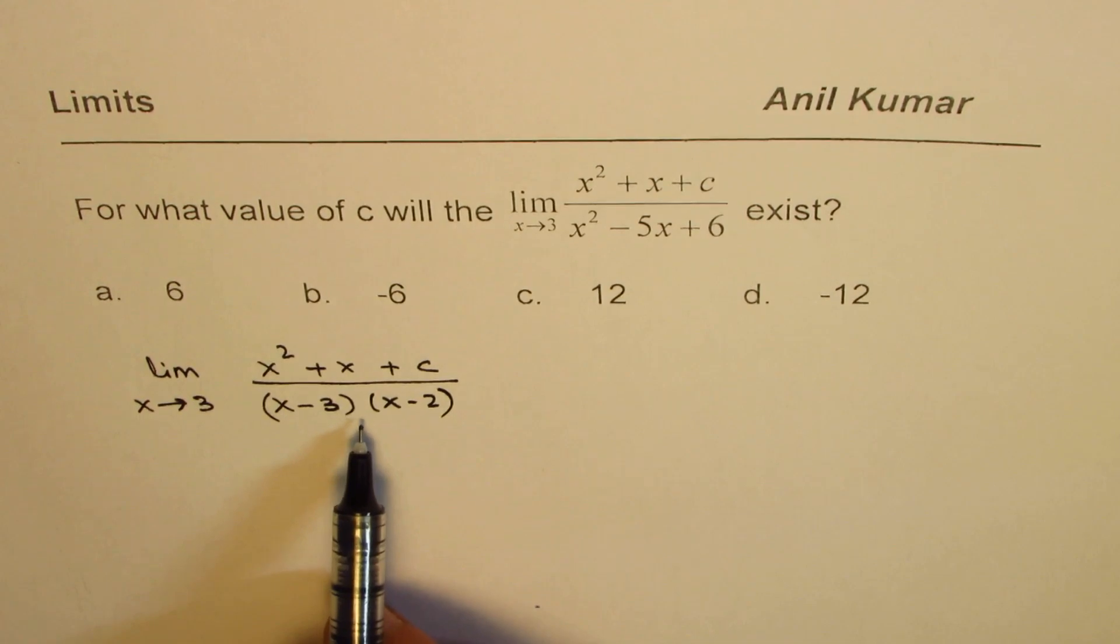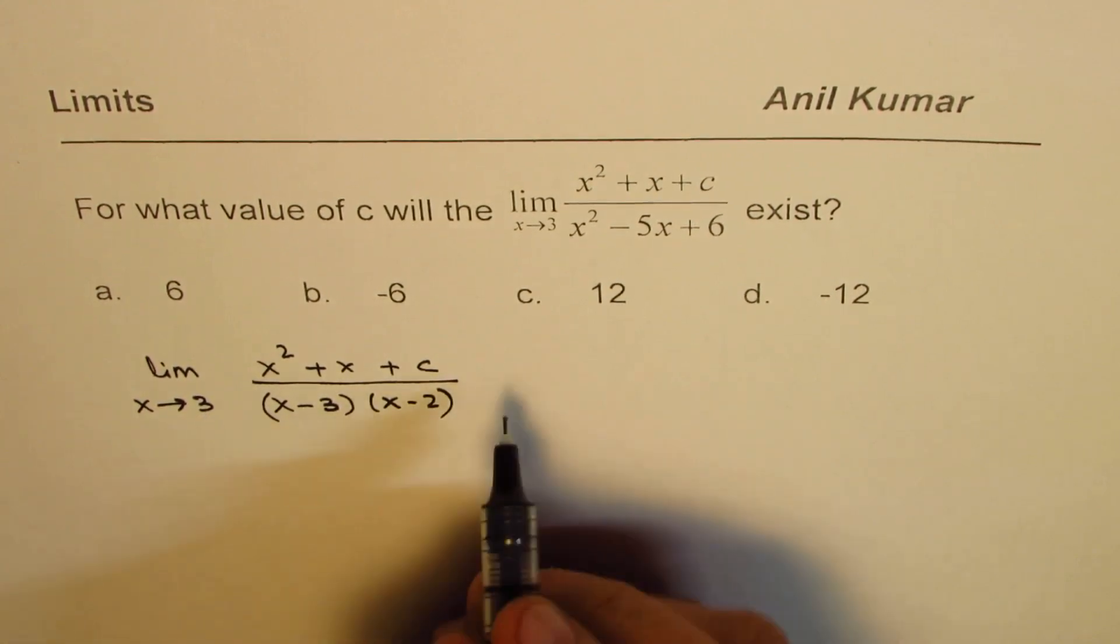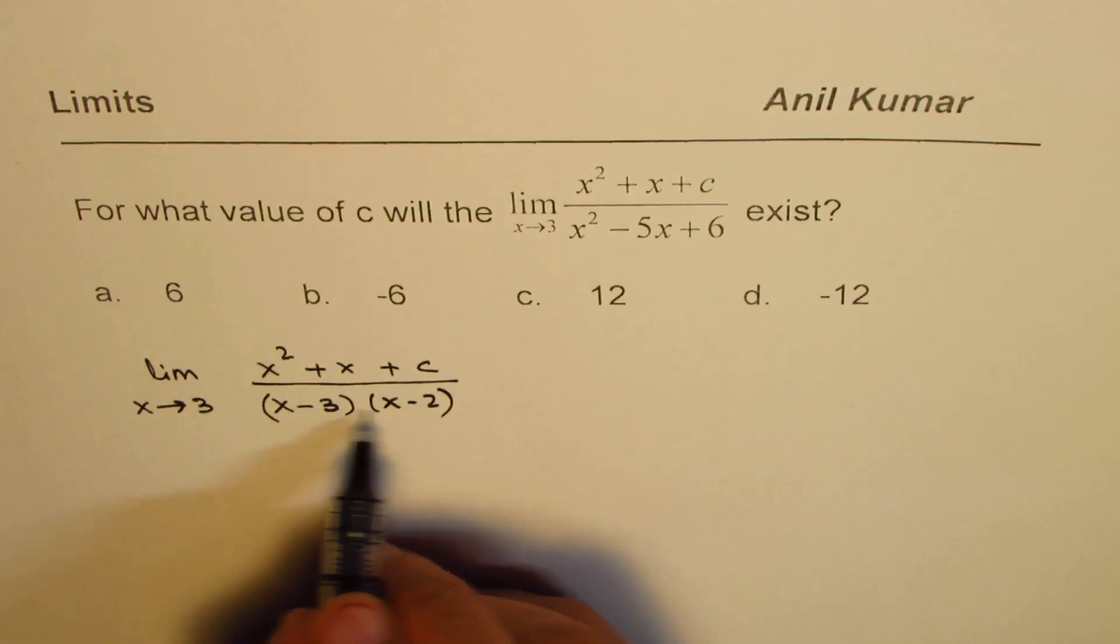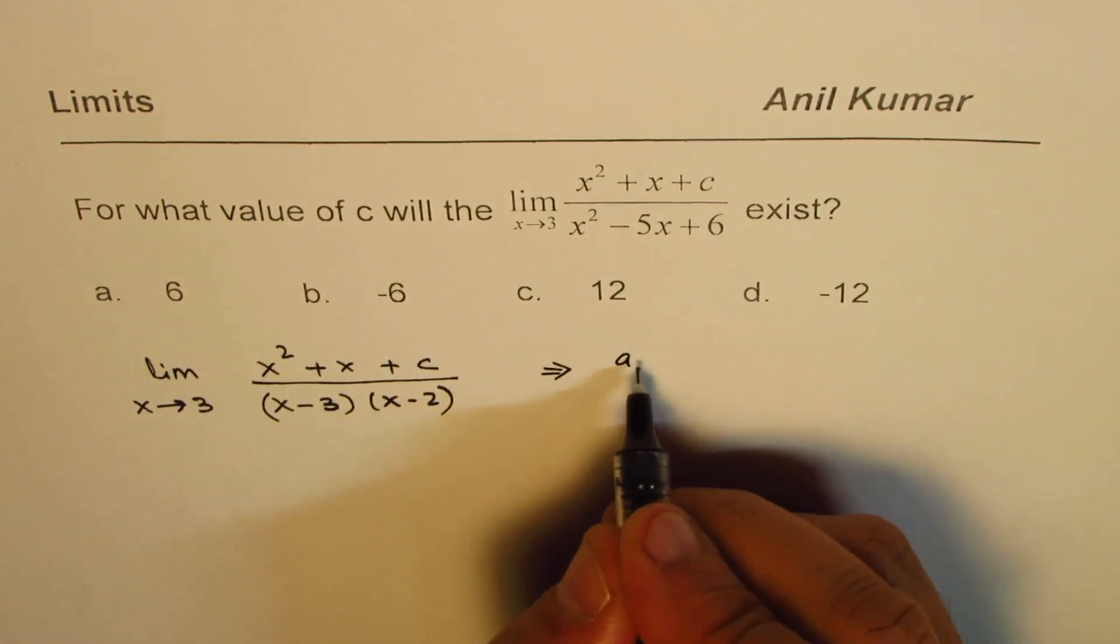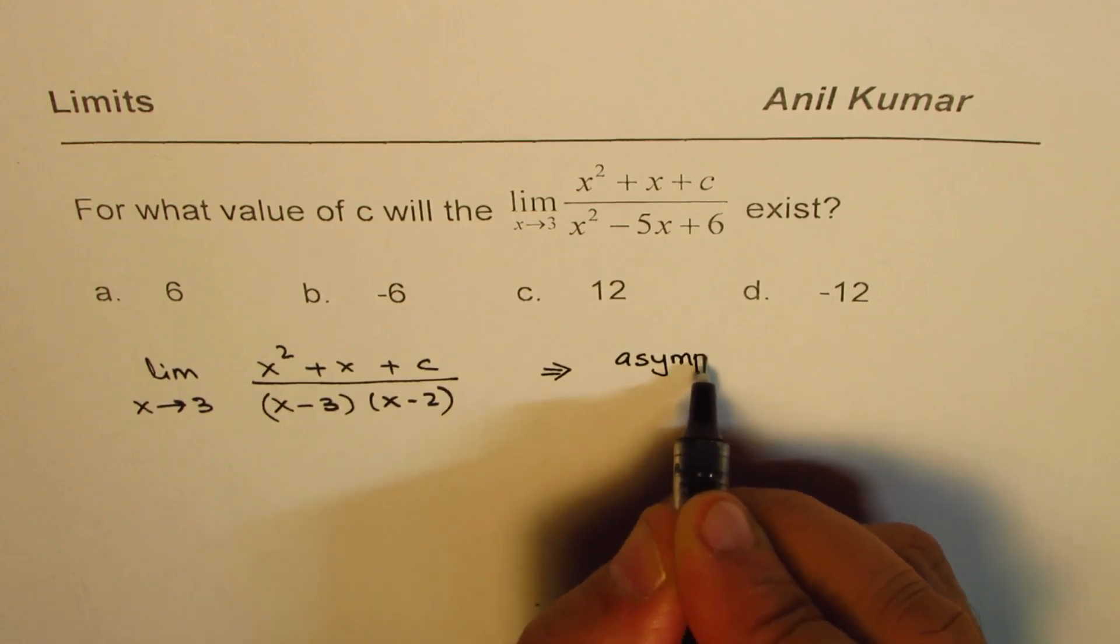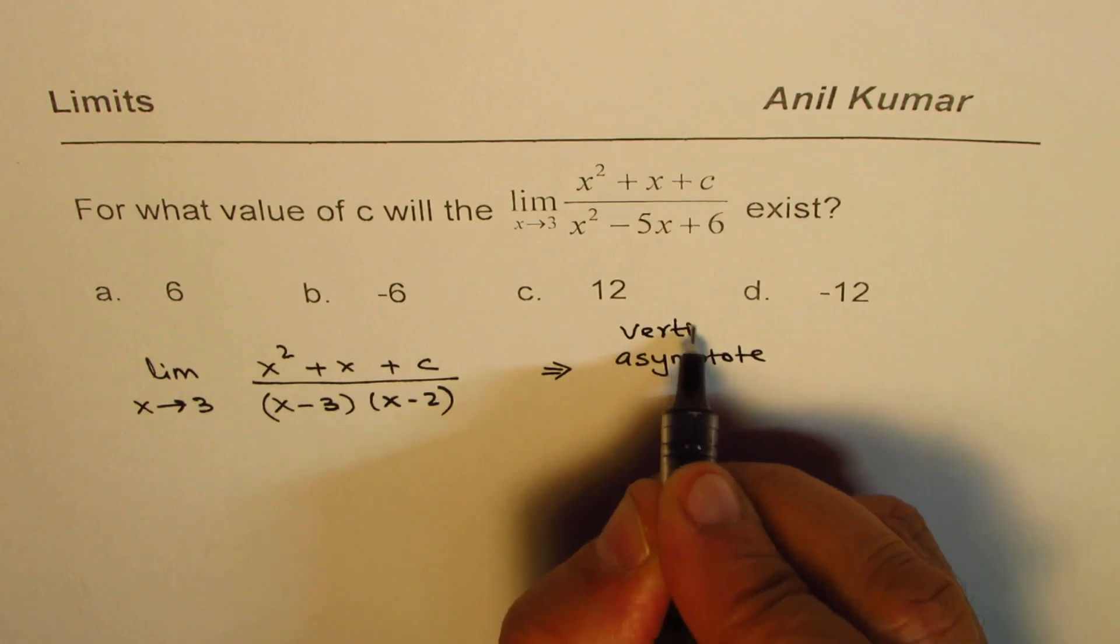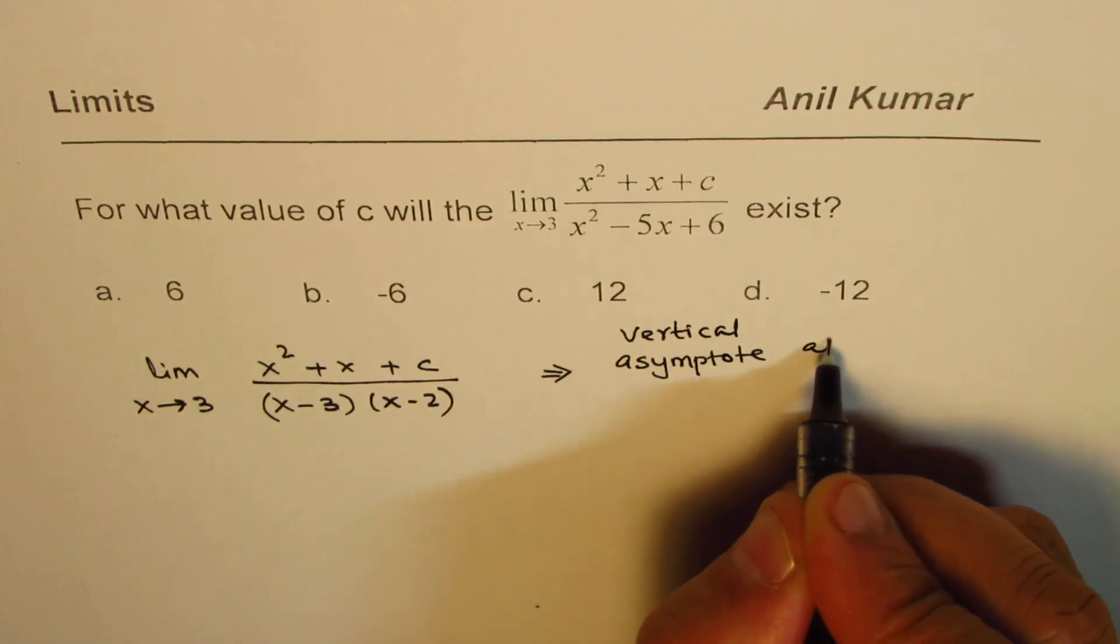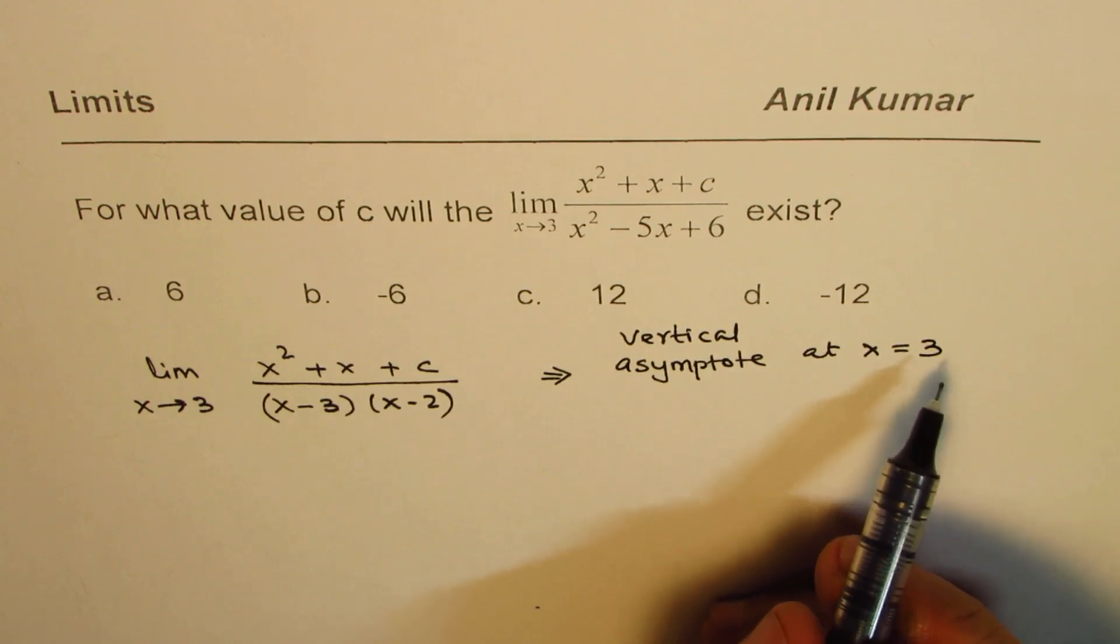Now, in this expression, if I substitute x equals to 3, I get infinity in the denominator, right? So that means we have asymptote, a vertical asymptote to be precise, at x equals to 3. Now, try to understand the question.